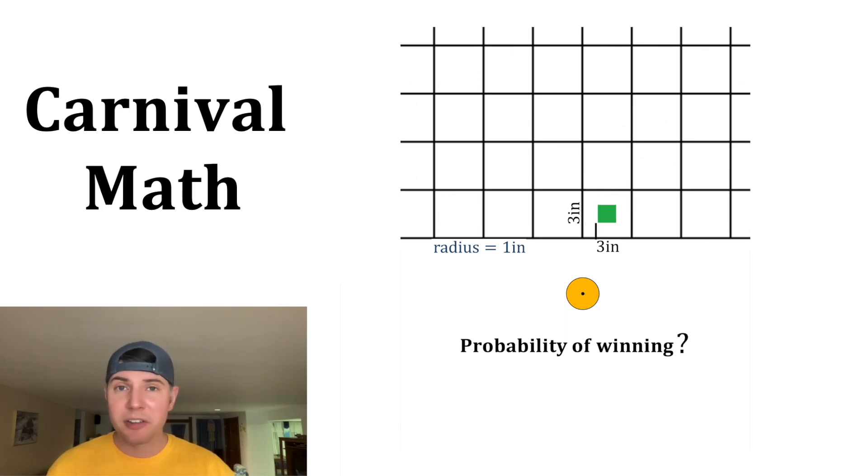So this green box represents everywhere that the center of our token can safely land, and we still win. Since the radius of our token is one, that means that our green box must have a buffer of one inch between it and the edge of the white boxes. So that leaves the dimensions of one by one for our green box.